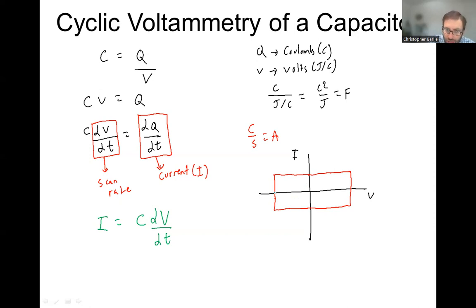Now if we increase the scan rate, what would happen? We get the same shape, but just a taller rectangle, because now dv dt is higher. C hasn't changed, because that's just determined by our capacitor on our electrode material. And so we get something like that.